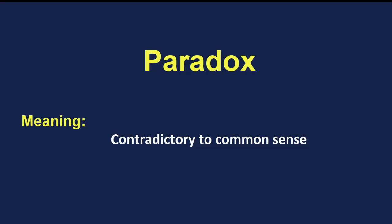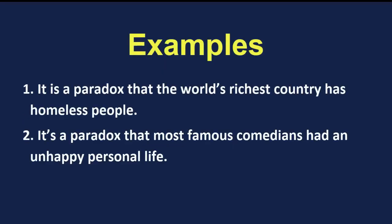I hope ki aap ko paradox ka matlab samajh mein aa gaya hoga. Let's see some examples. Our first example is: it's a paradox that the world's richest country has homeless people. Ki ye ek paradox hai ki duniya ki jo ameer tareen country hai uske andar homeless log hain.